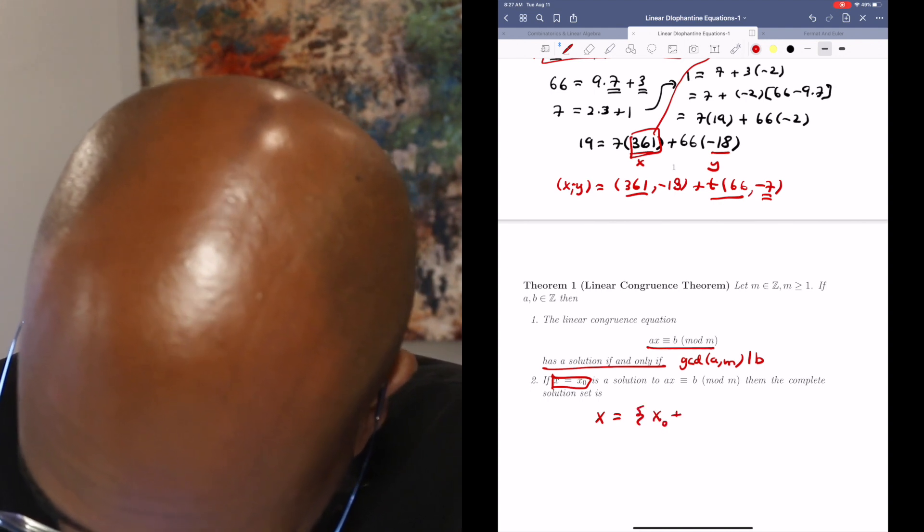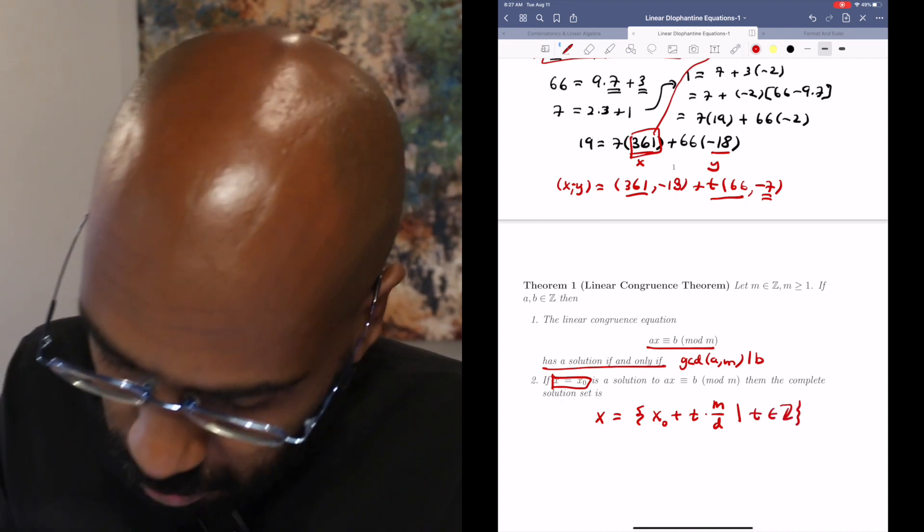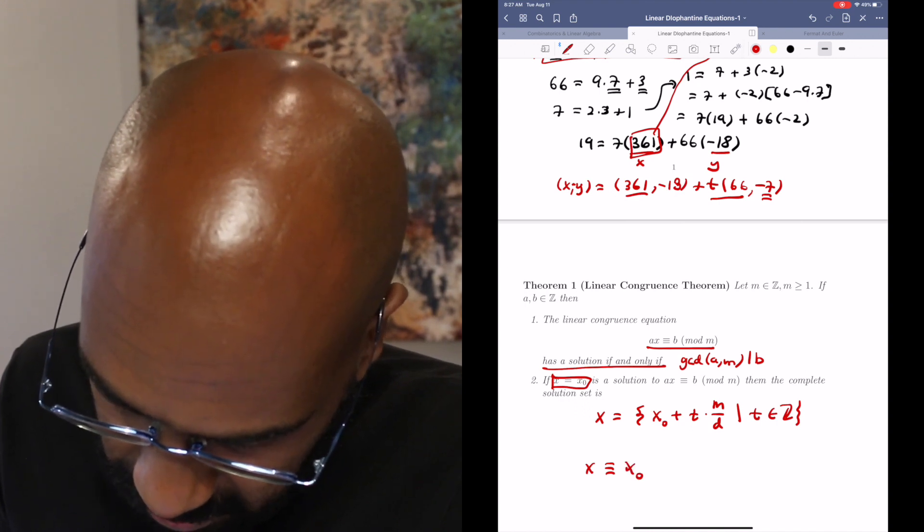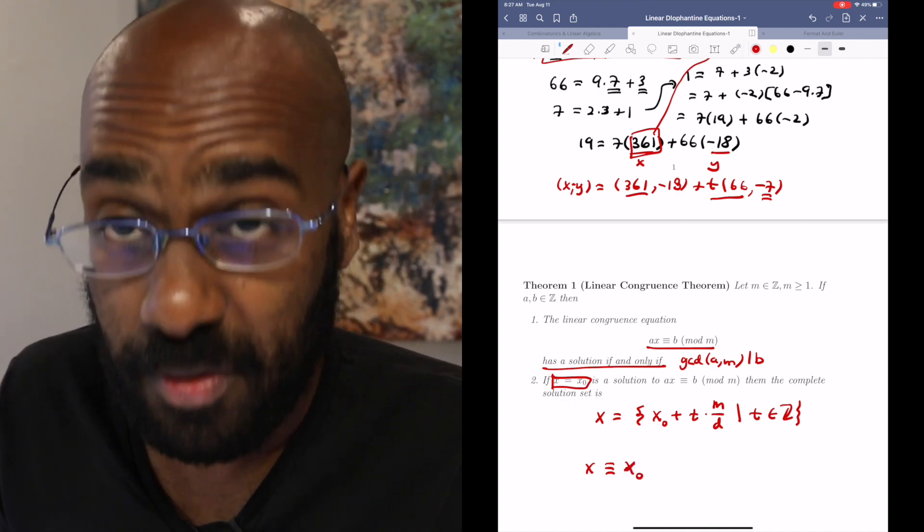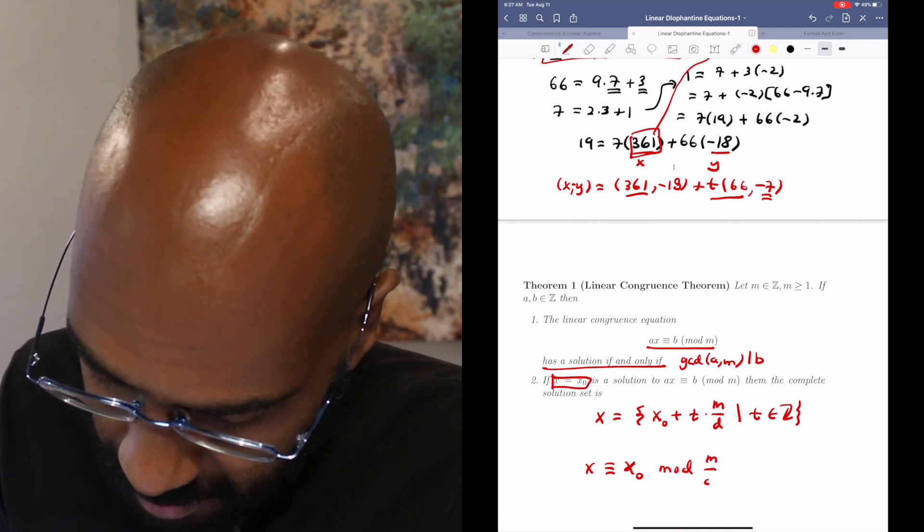where t is an integer, which we can also write more compactly as the things that are congruent to this x0 that we found, but modulo m over d.